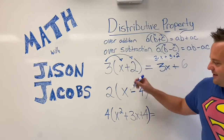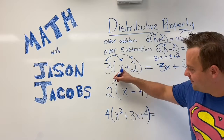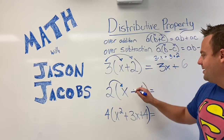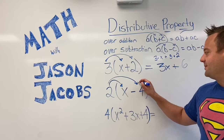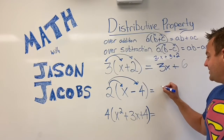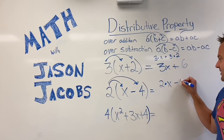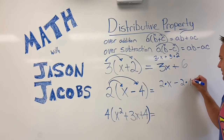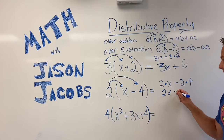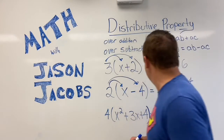This one is the Distributive Property over Subtraction because there's a subtraction sign here. So 2 times X minus 2 times 4 — the arrows really help. So 2 times X minus 2 times 4 simplifies to 2X minus 8.